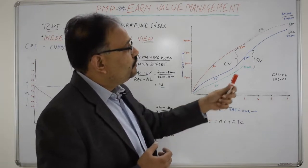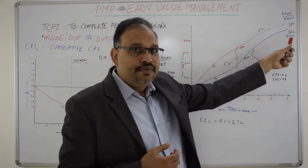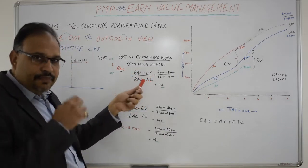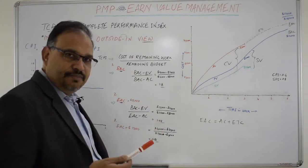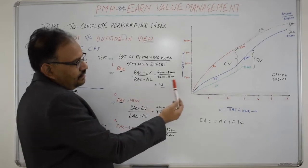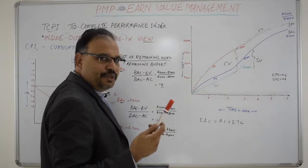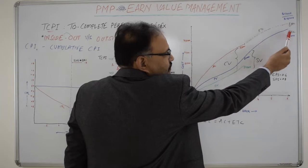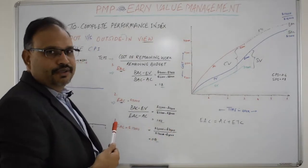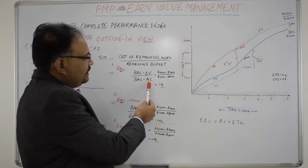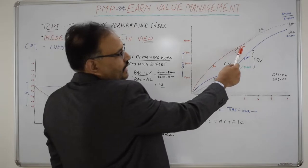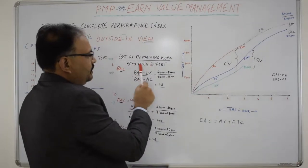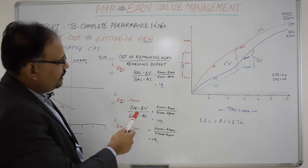When the project wants to achieve the original BAC, the TCPI formula is: (BAC minus EV) divided by (BAC minus AC). In our example, BAC minus EV represents the cost of remaining work — the project completed 8 kilometers worth $4,800 against an approved budget of $12,000, so the difference is the remaining work cost. BAC minus AC is the remaining budget — actual spend is $8,000 against a target of $12,000. In this scenario, TCPI comes out to 1.8.